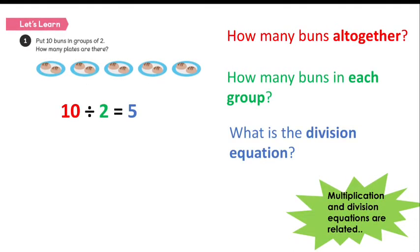So now we can write our division equation, which will be 10 divided by 2 equals 5. Because we had 10 buns altogether and there are 2 buns on each plate or in each group. And that means that we have 5 groups.